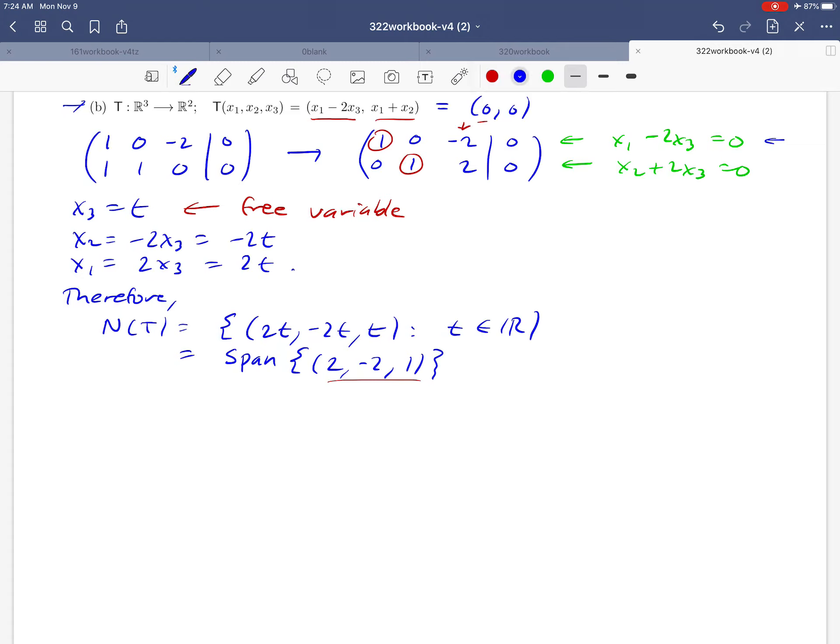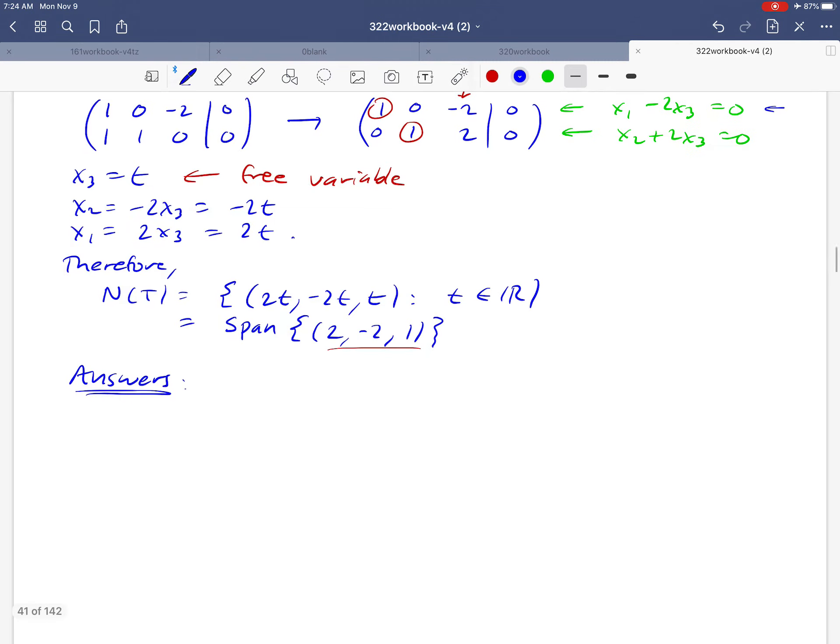And based on the kind of simplifying observations that we made in the last example, I claim that we're ready to actually give our answers here. We don't need to do a whole lot more work here. So the basis for our null space is just going to be the single vector set that contains 2, negative 2, and 1. That was our calculation above. Basis for N of T. I'm going to adopt this notation. When I write beta of N, I mean basis for the null space.